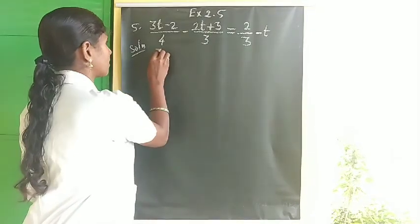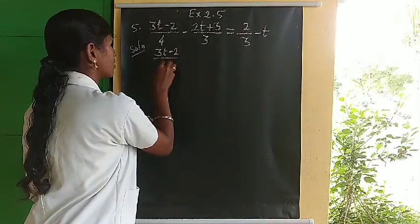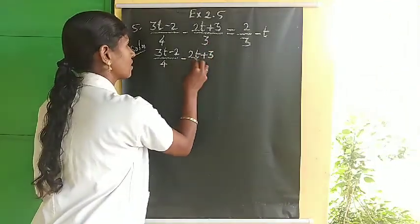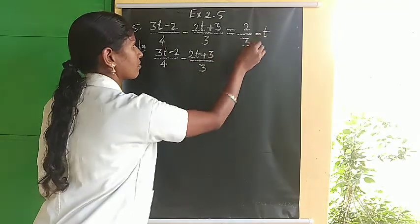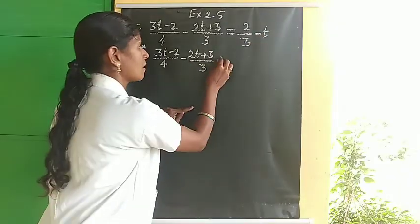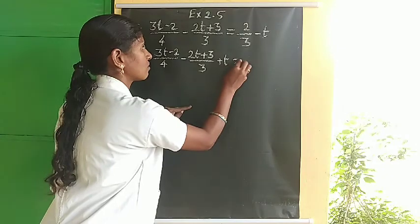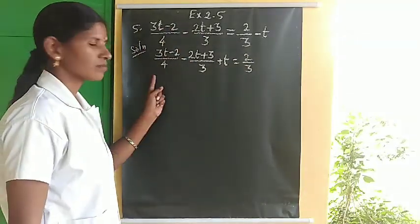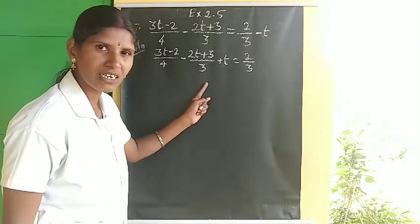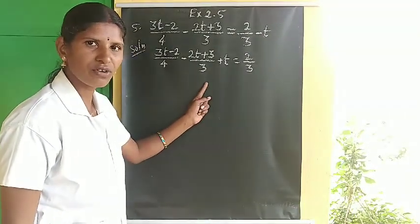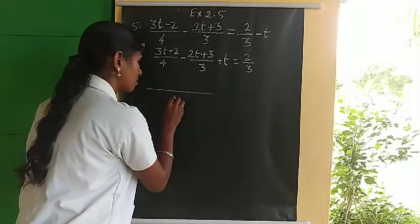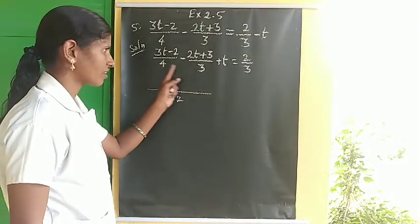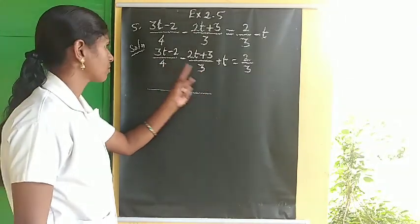The equation becomes: 3t minus 2 over 4 minus 2t plus 3 over 3 plus t equals 2 by 3. Transpose minus t to LHS, making it plus t. Now find the LCM of 4 and 3, which is 12.